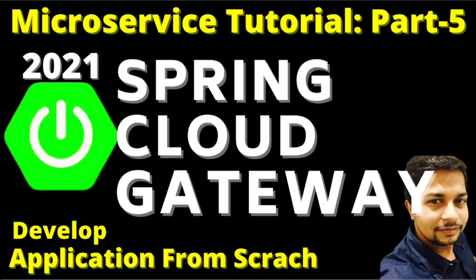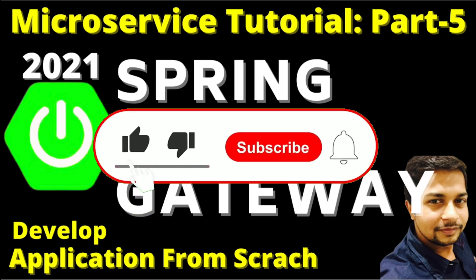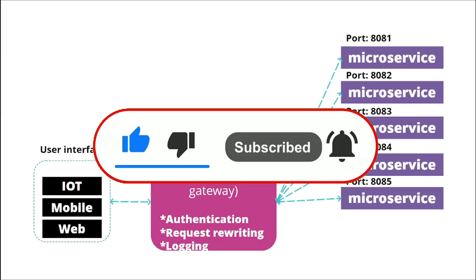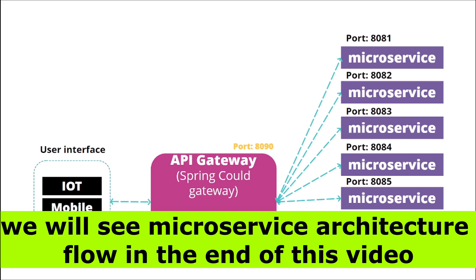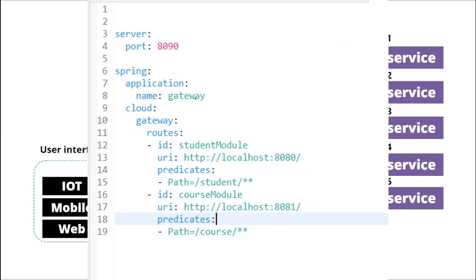Here we saw all the possibilities of what Gateway can do. I would like to request you to please like and share this video, and don't forget to subscribe the channel. In the last video, we created a project for API Gateway using Spring Cloud Gateway, and we accessed the microservice course API through it. We configured the course service URL in the Gateway configuration file, which is the application.yml file.